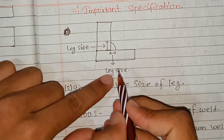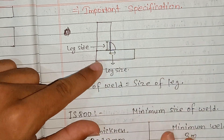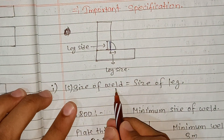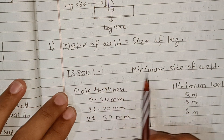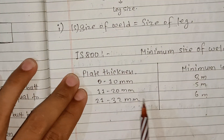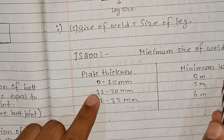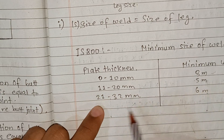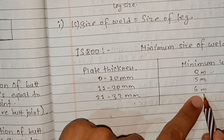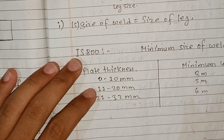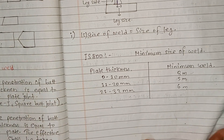First of all, we have leg size. The size of the leg is equal to — remember the minimum size of weld table: plate thickness up to 10 mm gives 3 mm minimum weld; up to 20 mm gives 5 mm; up to 32 mm gives 6 mm minimum weld. So remember the size of weld.